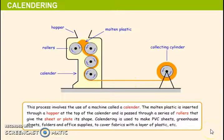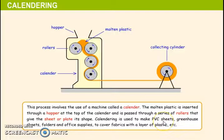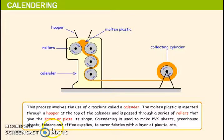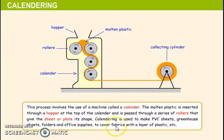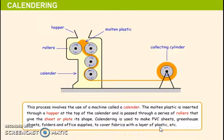Calendaring is used to make, for example, PVC sheets, greenhouse sheets, folders and office supplies, to cover fabrics with a layer of plastic, and more.